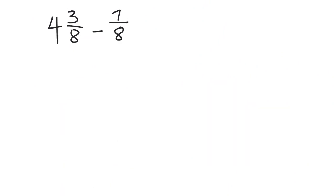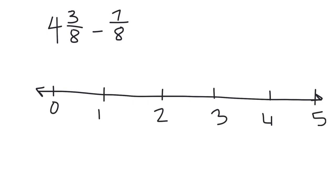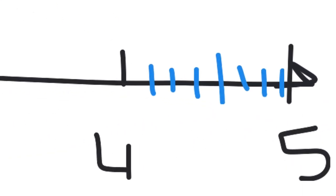We're going to start with the number line, representing four and three-eighths. Here's my zero, one, two, three, four, and five. To represent three-eighths, I'm going to cut this interval into eight pieces. It's getting kind of small, so I'm going to zoom in, and we're going to have to represent four and three-eighths. So four and three-eighths is right here.